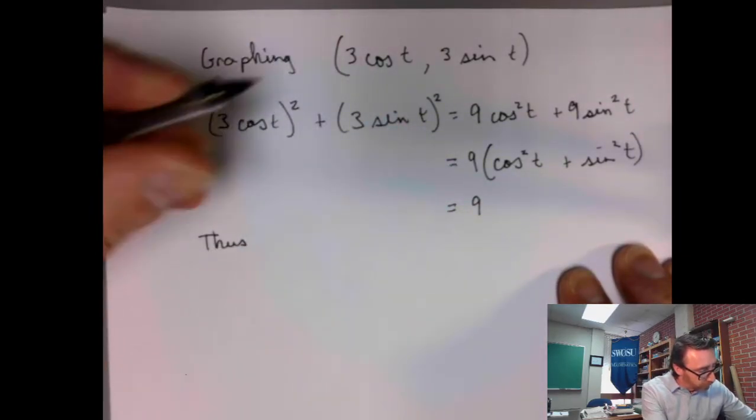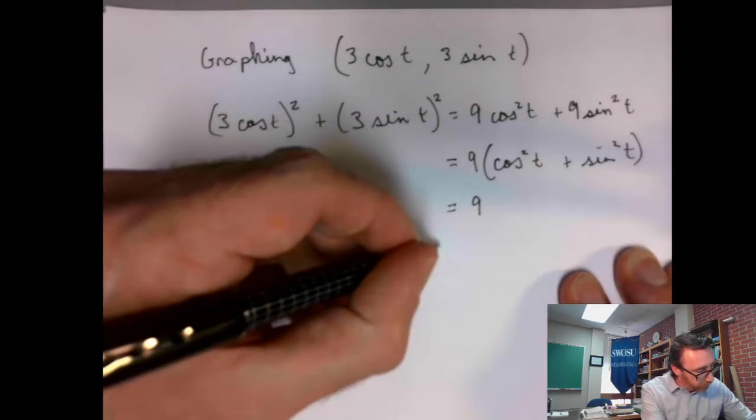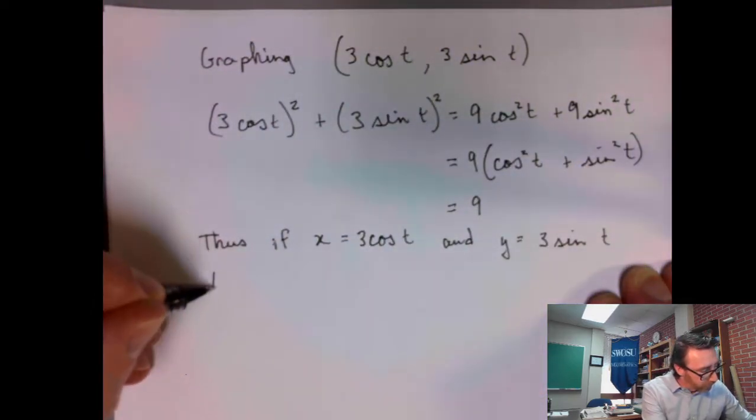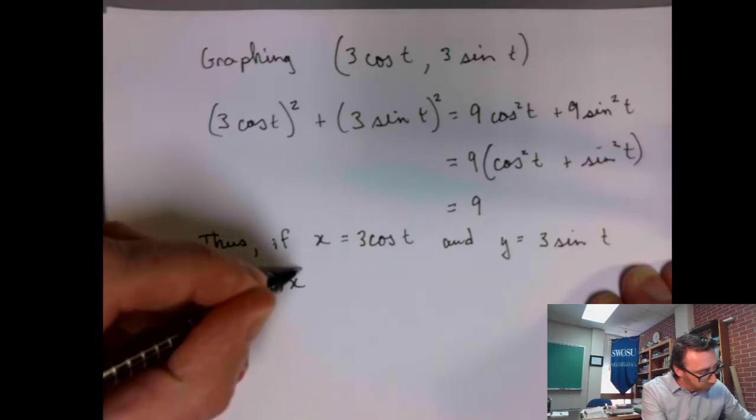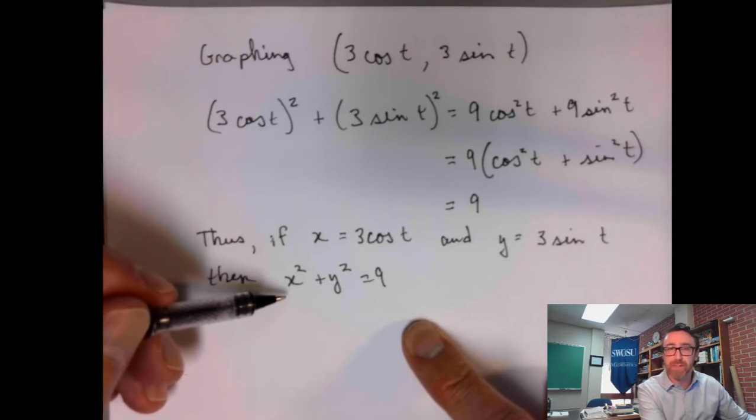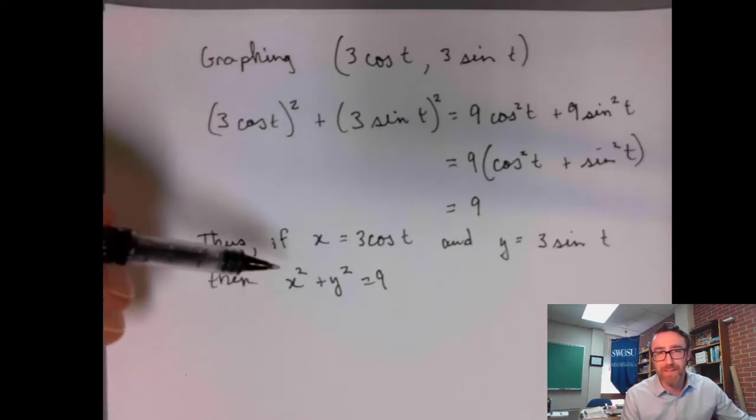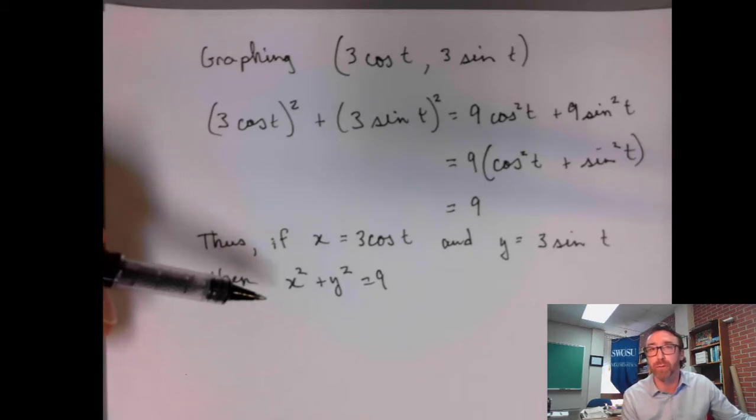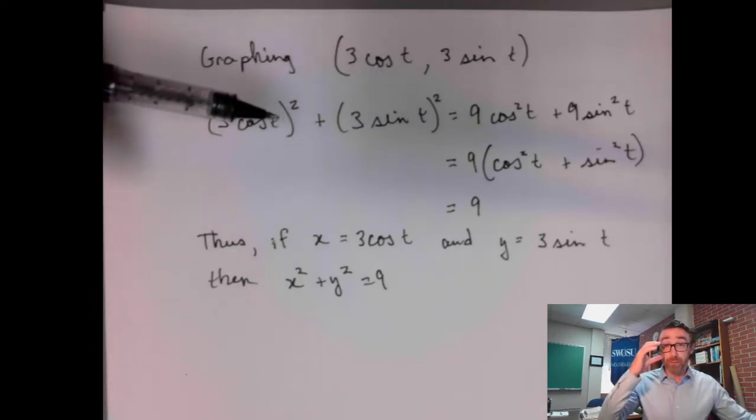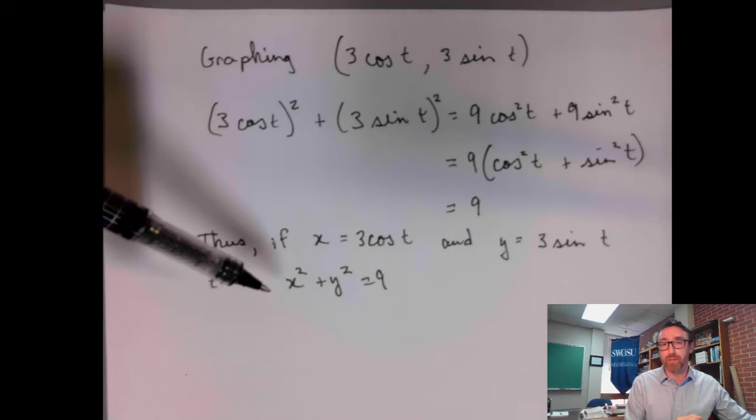So, thus, if x is equal to 3 cosine t and y is equal to 3 sine t, then x squared plus y squared equals 9. So these coordinate functions fit into this algebraic equation. So the graph of these parametric equations has to be on the graph of this algebraic equation. So you can look at your parametric equations and then you can figure out what the graph is going to look like based on what algebraic equations those guys fit into.